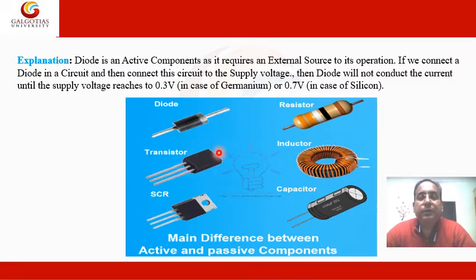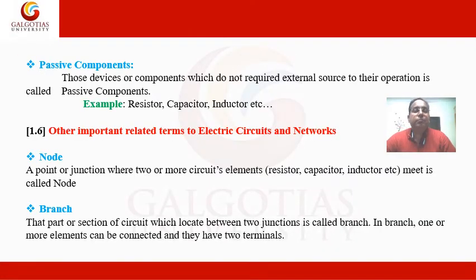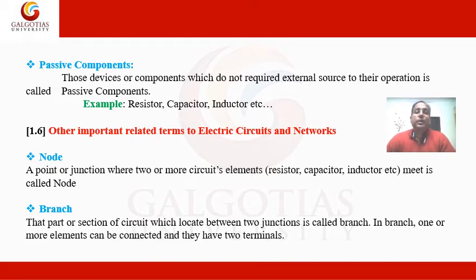Here you can see photos of active and passive components. Active components include diodes, transistors, and SCR (Silicon Controlled Rectifier). Passive components are resistors, inductors, and capacitors. Active components need an external source for operation, while passive components such as resistors, capacitors, and inductors do not need any external source for their operation.